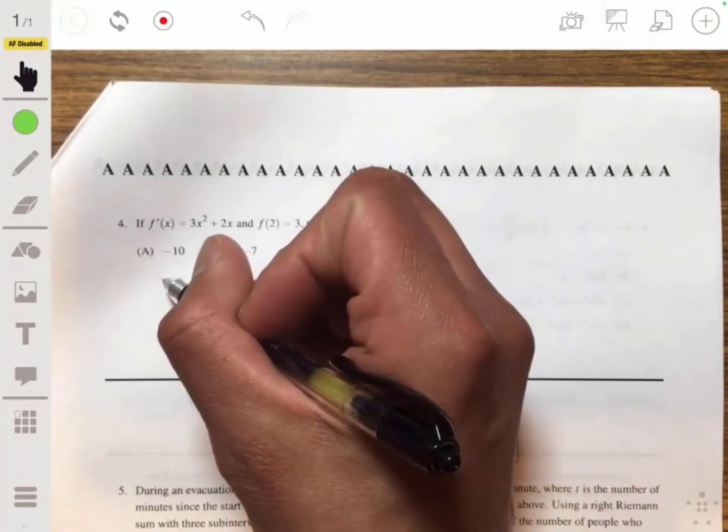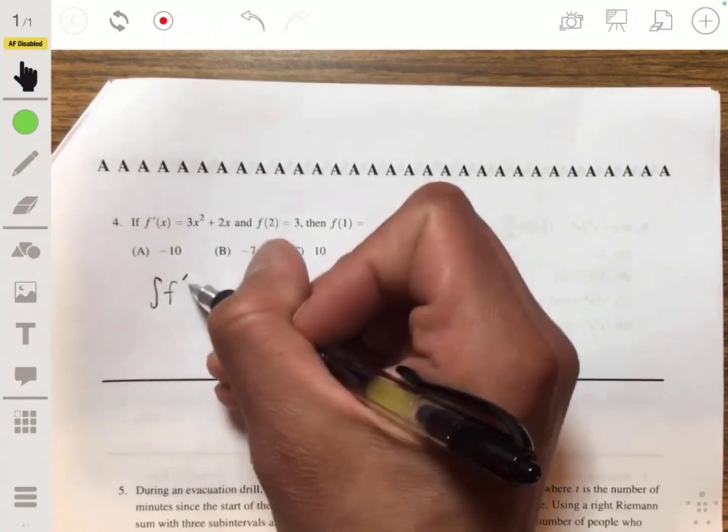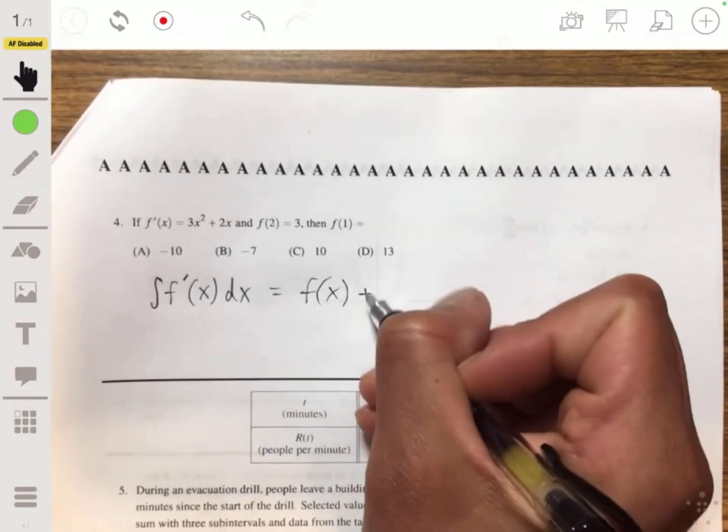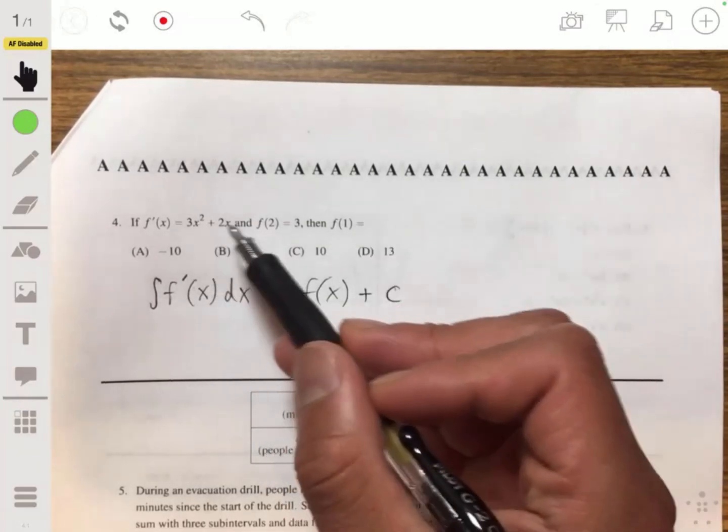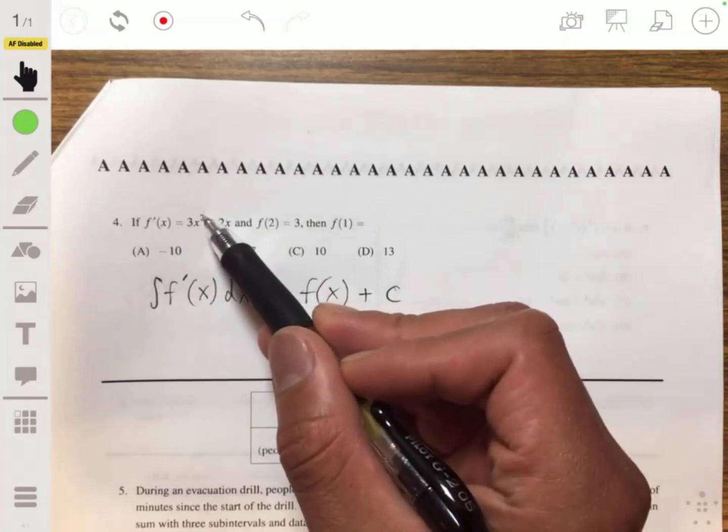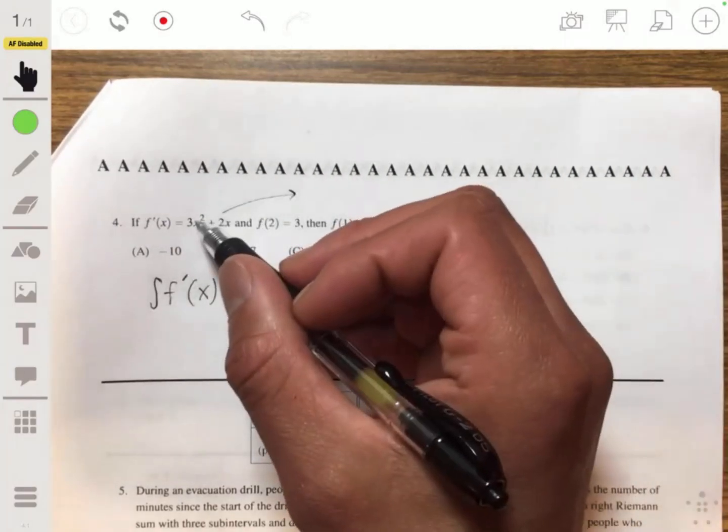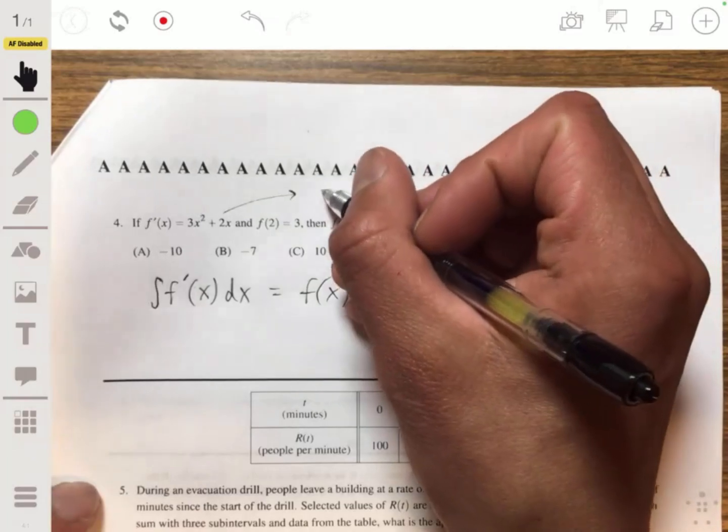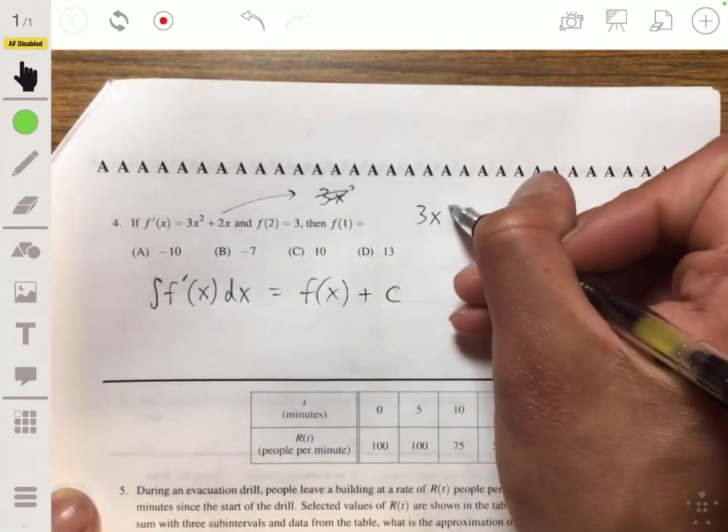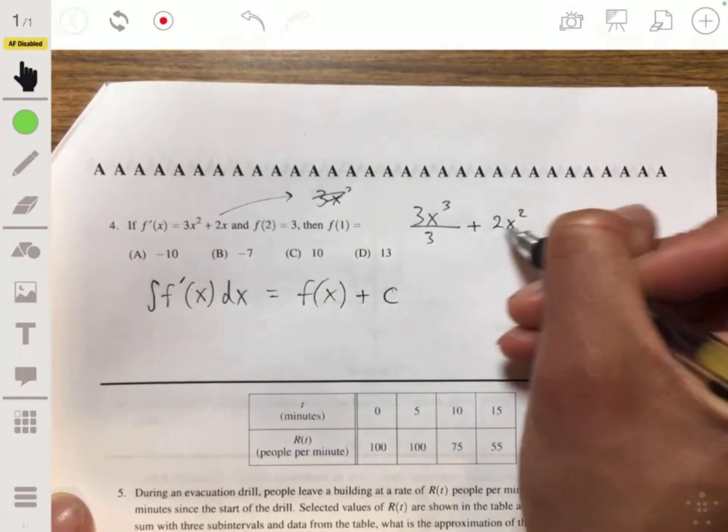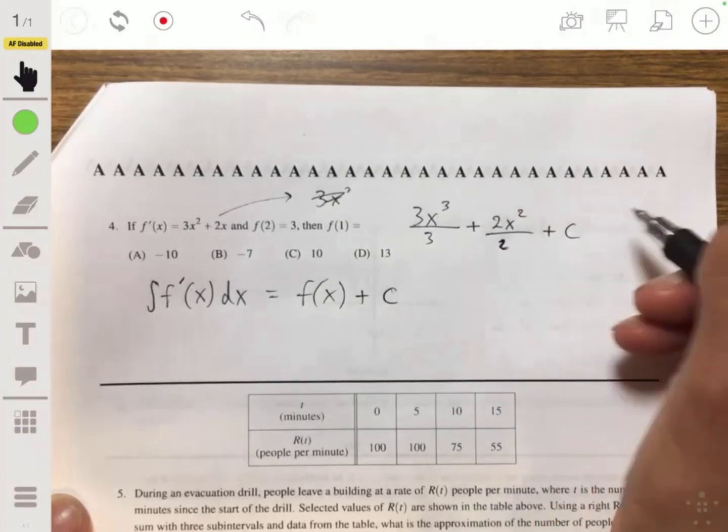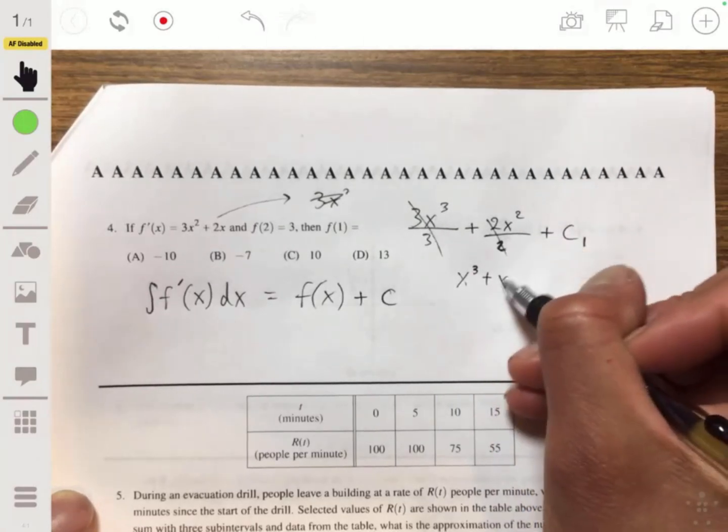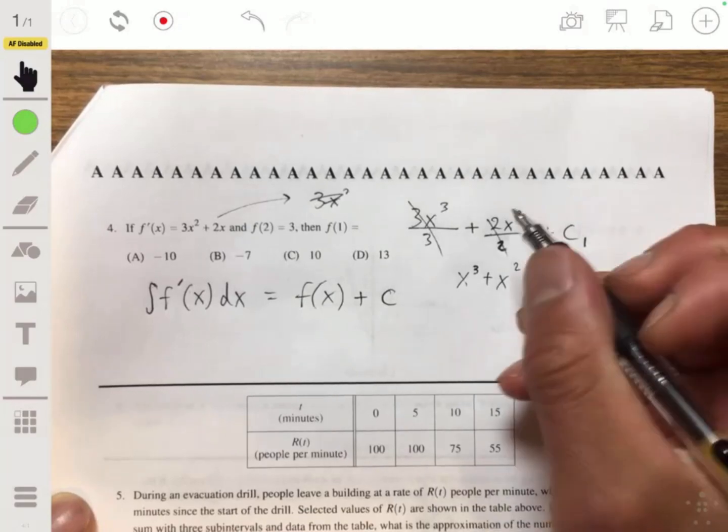So we're just going to use the concept of integrating a derivative. Because when you integrate a derivative, in this case f'(x), you're going to get the function f(x) plus c. So then, let's first find the antiderivative of this, which will be 3x^3/3 plus 2x^2/2 plus c1. These cancel, so we get x^3 + x^2 + c1 for f(x).